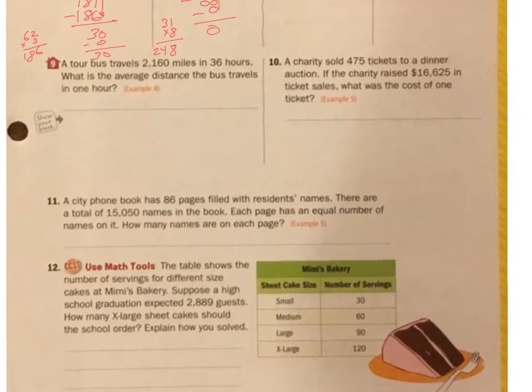Let's move to number 9. A bus travels 2,160 miles in 36 hours. What's the average distance the bus travels in 1 hour? So we have to do 2160 divided by 36 hours. So it doesn't go into 2, it doesn't go into 21, but it does go into 216. I'm going to say 5, maybe 6. Let me try 6. 6 times 6 is 36. 6 times 3 is 18, 19, 20, 21. Exactly.